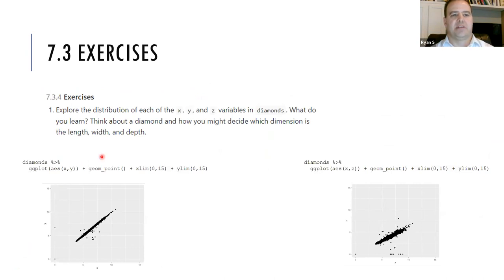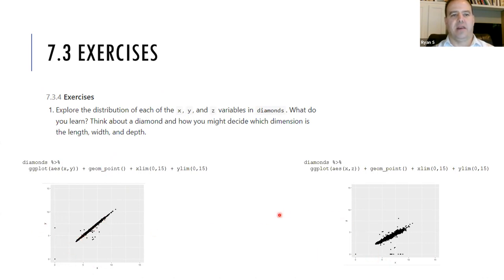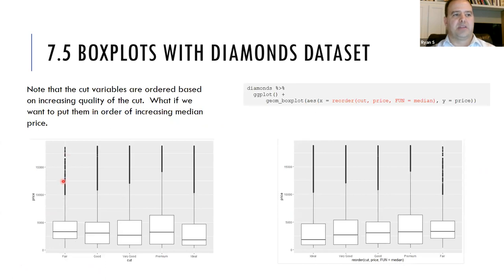Then we did some exercises together where we walked through trying to figure out how to tell which was the x, which was the y, and which was the z variable compared to length, width, and depth. There were some responses put into the slack. What I have here is the one I went over — being able to compare x and y, and then x and z. Obviously there are multiple ways to go about doing this one.